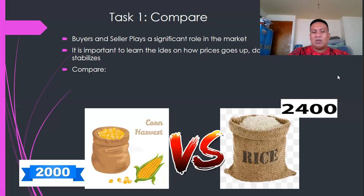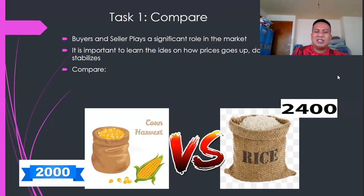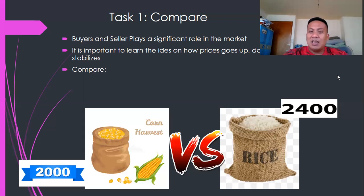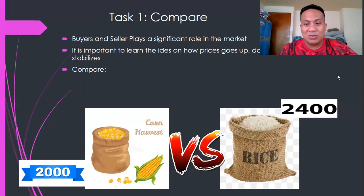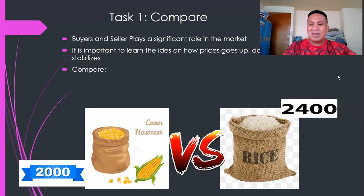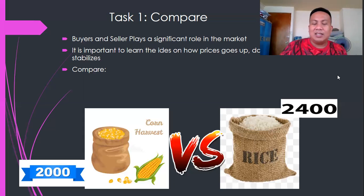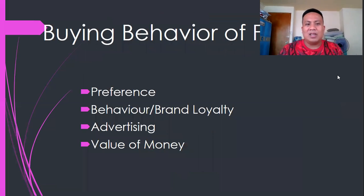There is a 400-peso difference between these two. Some might say they'd buy the sack of corn since it's 2,000 and they can use the 400 for other purchases. Others would still choose rice even if it's 400 more, because buying decisions depend on preference — not everything cheap is desired. Sometimes people go for better quality and a product that satisfies what they really want. Whatever your answer is, it's fine as long as you justify it.